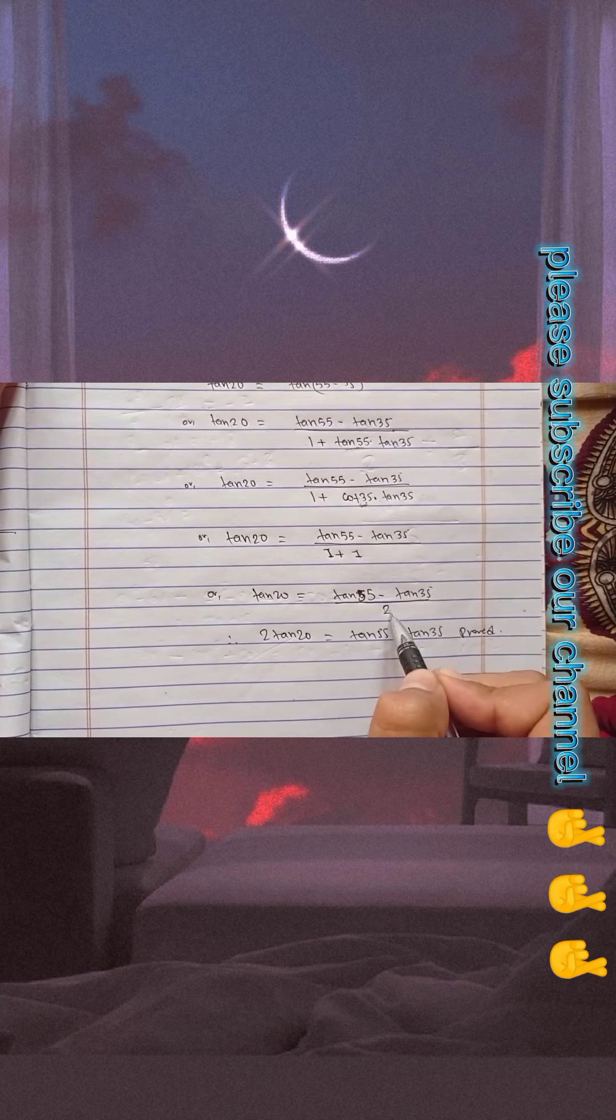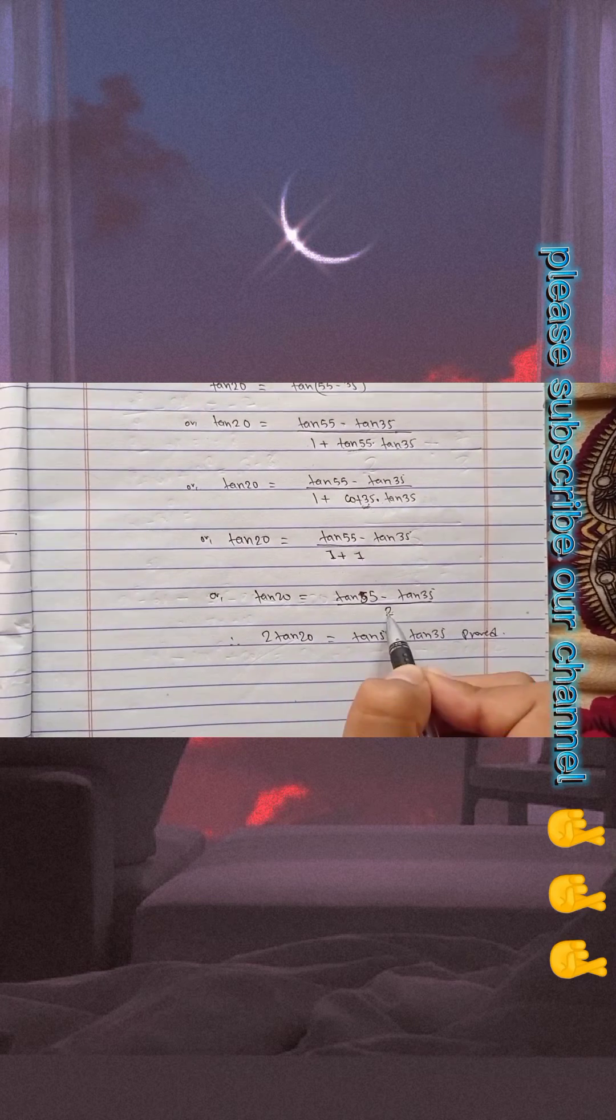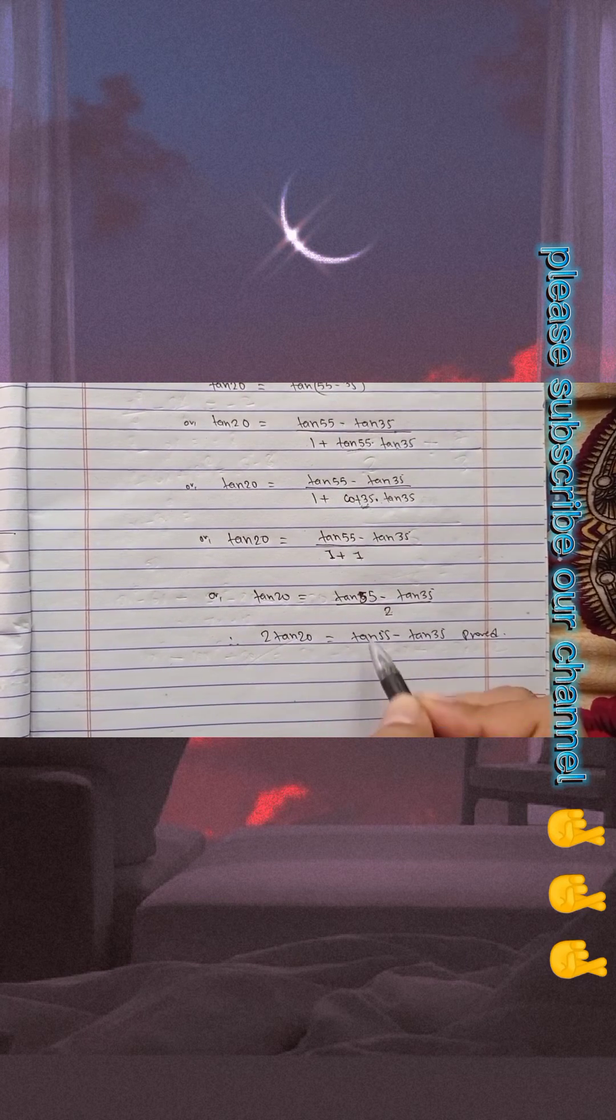Here I have cross multiplied this, and 2 into tan20° is 2tan20° equals tan55° minus tan35°, which we have to prove.